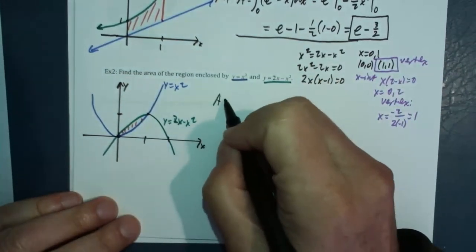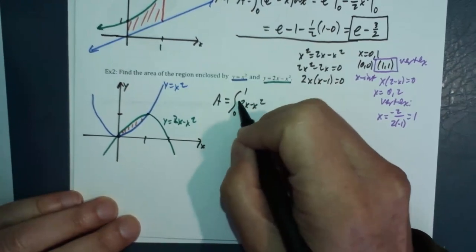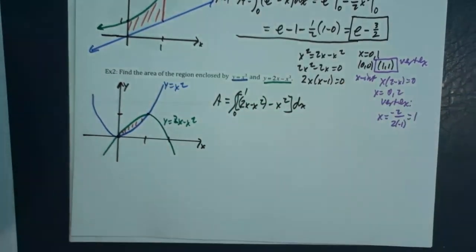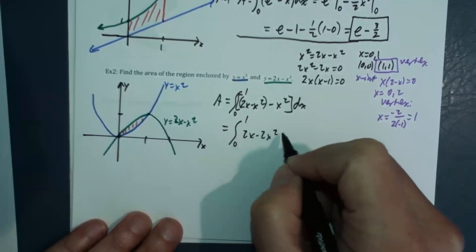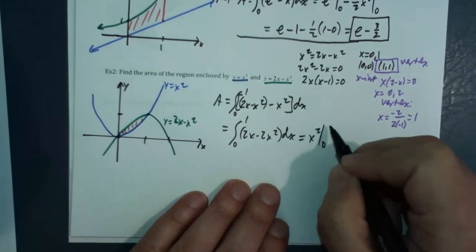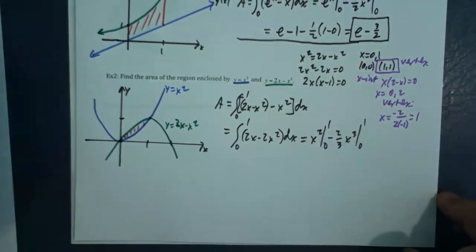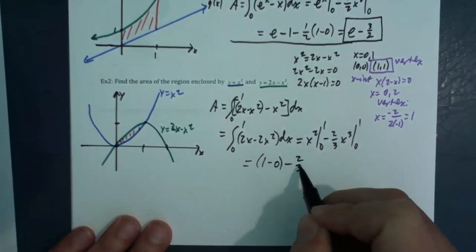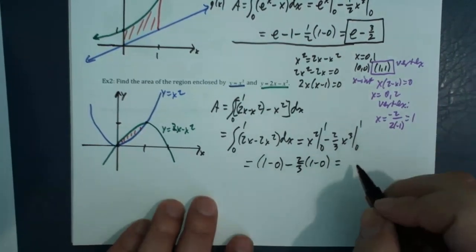The area of interest is the integral from 0 to 1 of (2x minus x squared) minus x squared, dx, which simplifies to the integral from 0 to 1 of (2x minus 2x squared), dx. With zeros and ones, it evaluates to 1 minus two-thirds, which is just one-third.